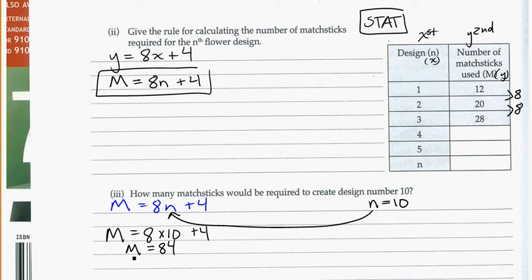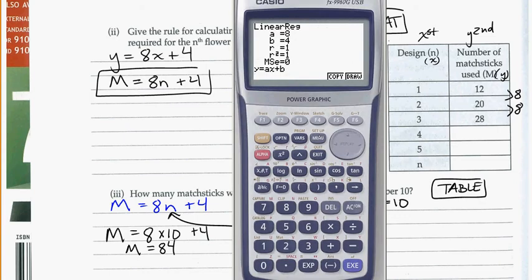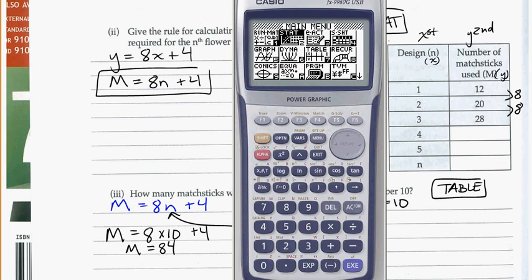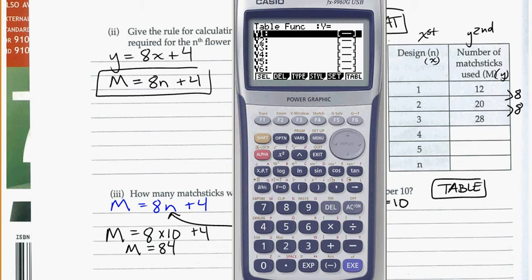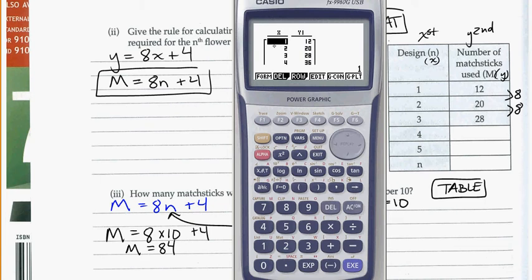So I'd expect to use 84 matchsticks to get design number 10. Now the second way that we can use our calculator to help us figure this out is to use the table function. So if we go back to our calculator, back to the menu, and we're going to select F number 7 for table. So I'm going to enter in my general rule as I see it. So M equals 8n plus 4, using X as our variable, and make sure you use this key here for X. Don't try and use the M or the n, just use the X. So we have 8x plus 4. Go ahead and press enter. So now we've entered in that equation. Click on table, F6.